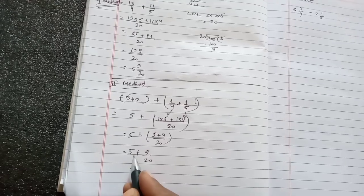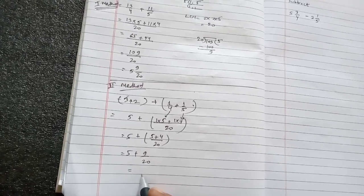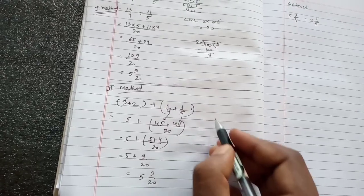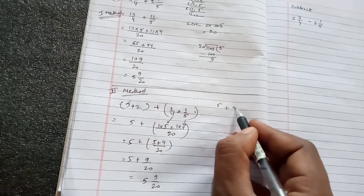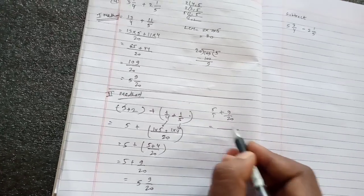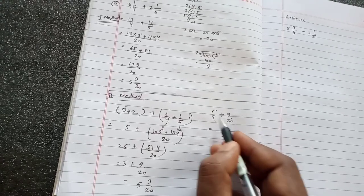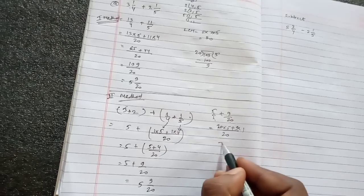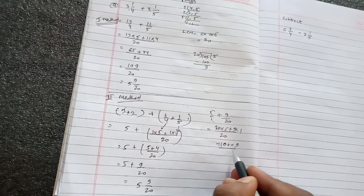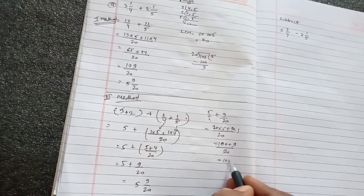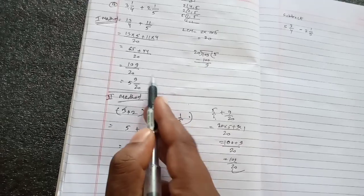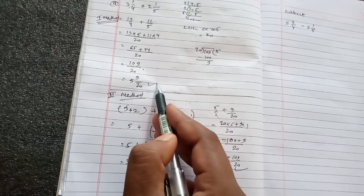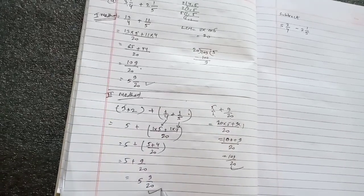If you want to check, 5 plus 9/20 becomes 5 times 20 plus 9, which is 100 plus 9, so 109/20. Here also we got 109/20. Then we change this into mixed fraction and get 5 9/20. You can see this answer and this answer are the same.